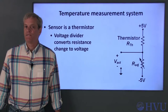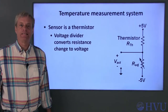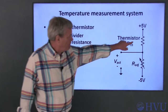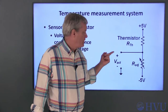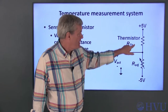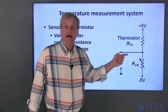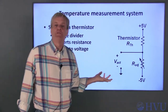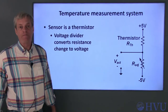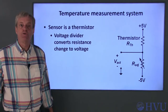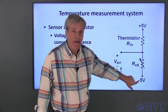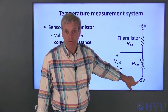The first subsystem we'll talk about is the temperature measurement system. I'm going to use a simple voltage divider to output a voltage that's proportional to the temperature of a thermistor. I want the output voltage to be zero volts at room temperature. To achieve that, I'm going to use two power supplies, plus 5 volts and negative 5 volts.